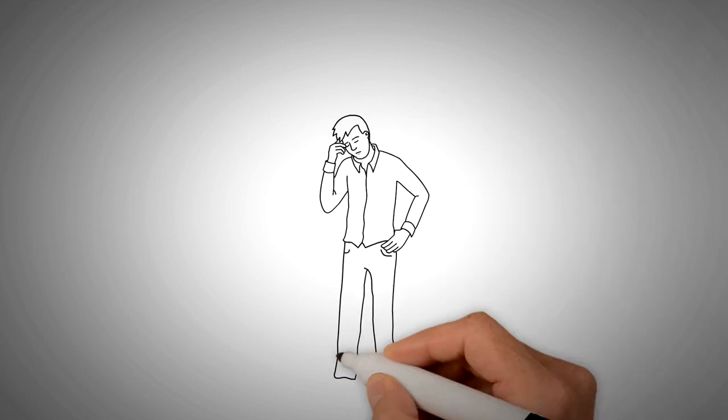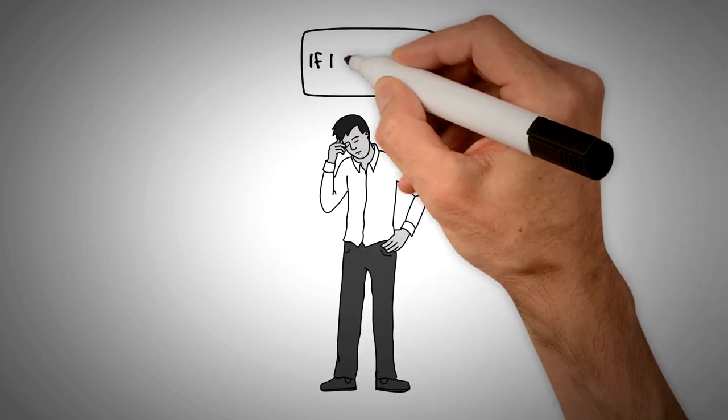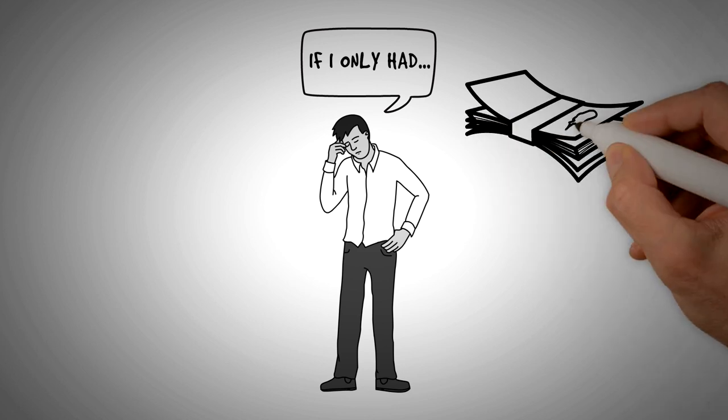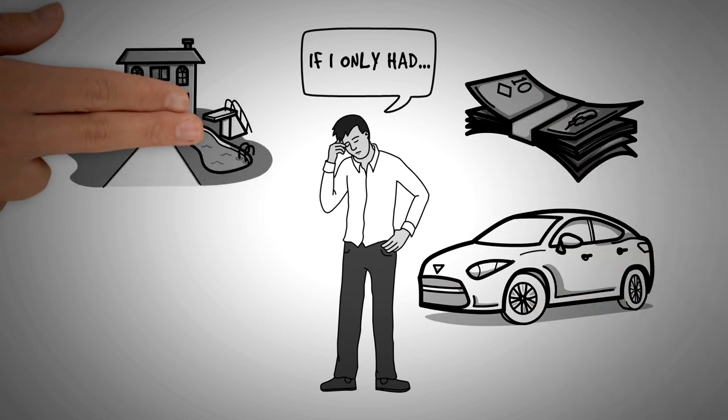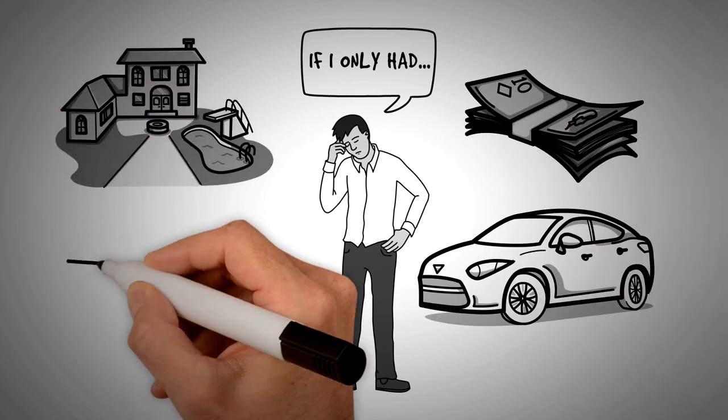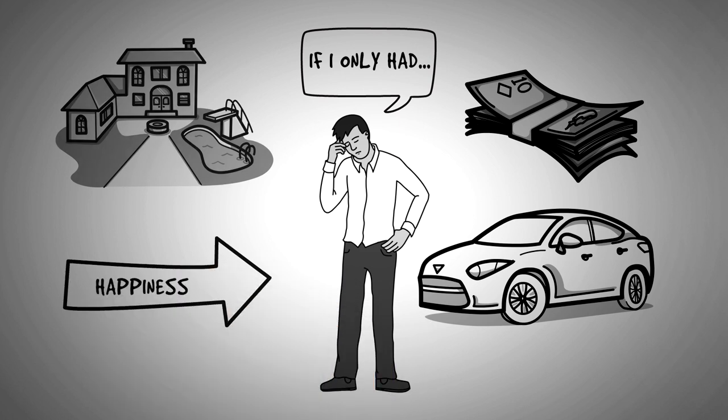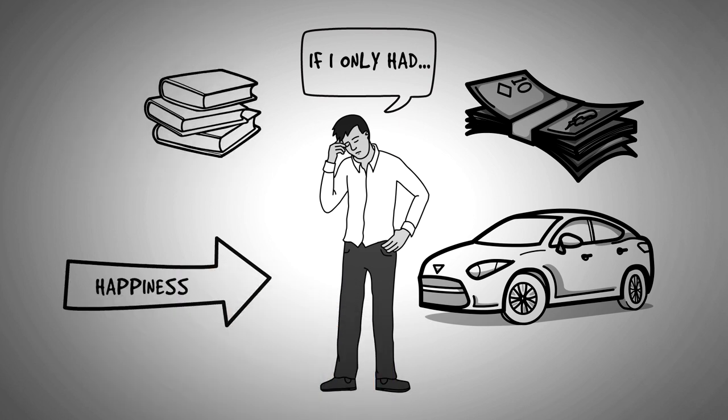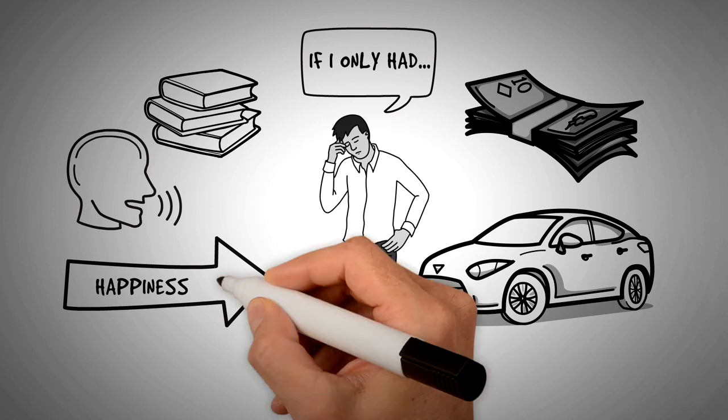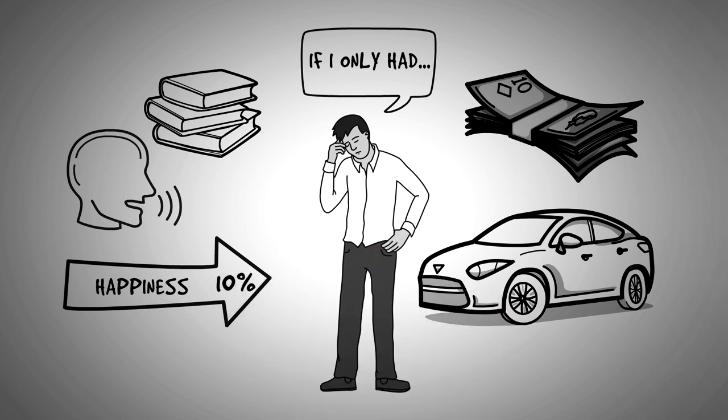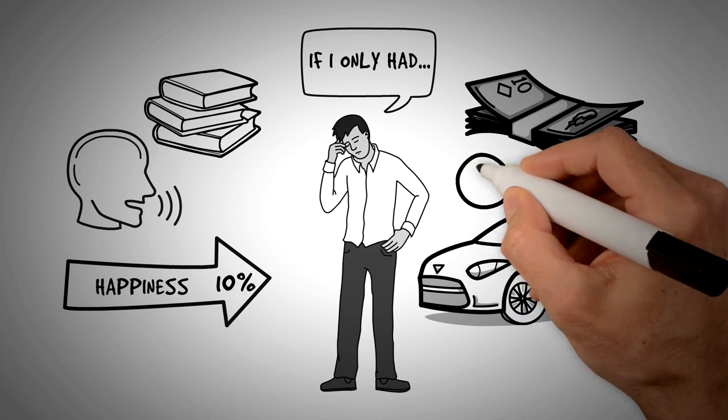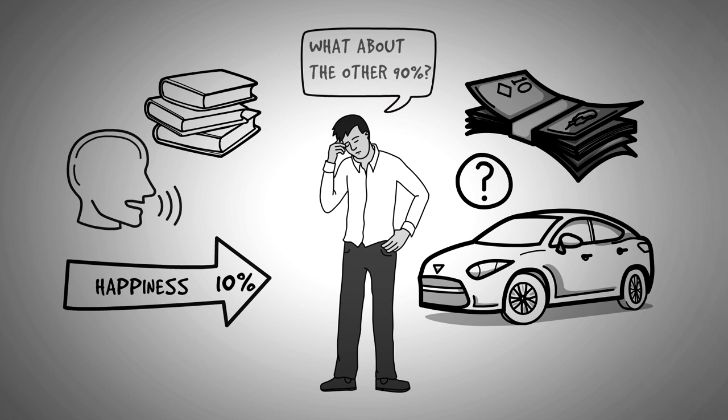How many times have you heard people say that they'll be happy only if something happens, if they had more money, if they had a better car or a better house or something else? People tend to believe that their happiness comes from the outside. However, if you've read a book or listened to a talk about happiness in the past 30 years, there's a good chance you heard that only 10% of your happiness comes from your life circumstances. So we're left with the million-dollar question. What about the other 90%?